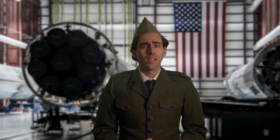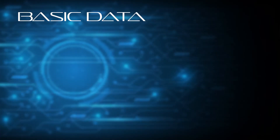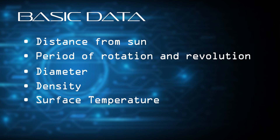Once you have landed on or near your astronomical body, your job is to gather the following scientific data and present it in your mission report to the directors of NASA: distance from the Sun, period of rotation and revolution, diameter, density, surface temperature, and surface gravity.